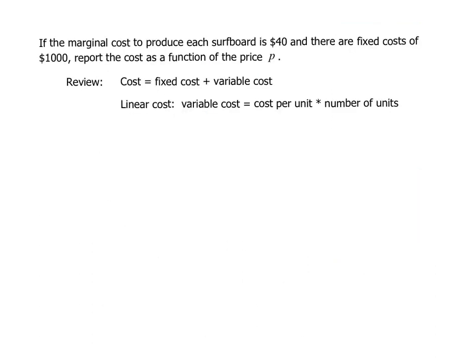In this next part they tell us the marginal cost to produce each surfboard is $40 and there are fixed costs of $1000. Report the cost as a function of the price P.